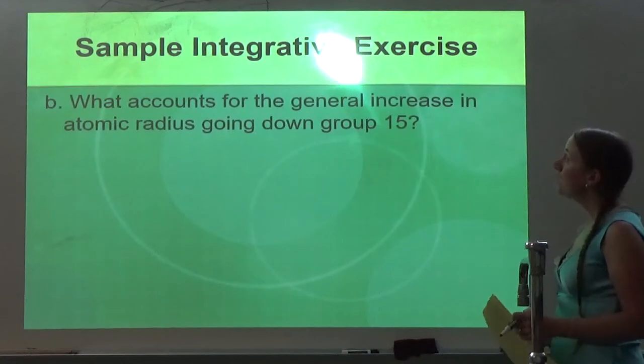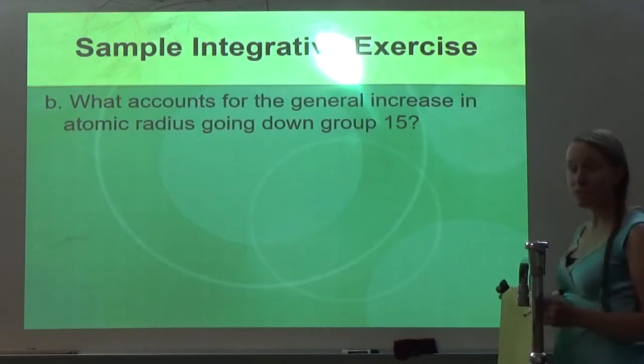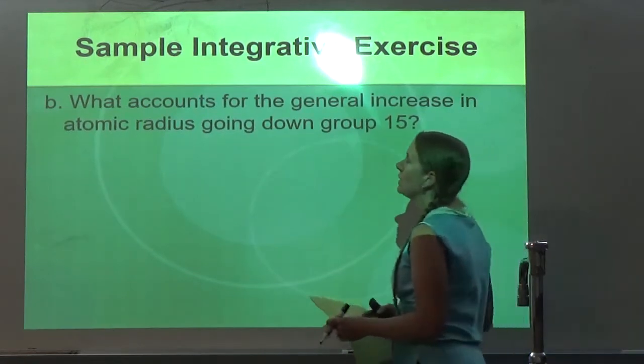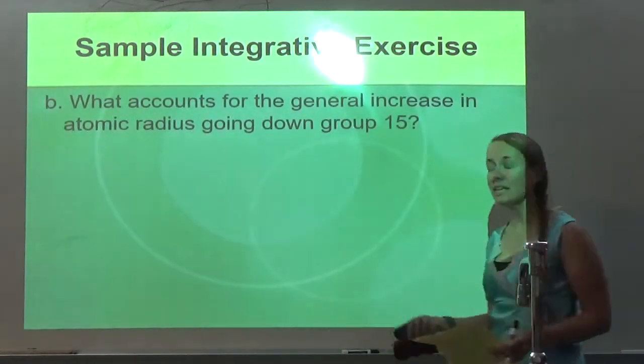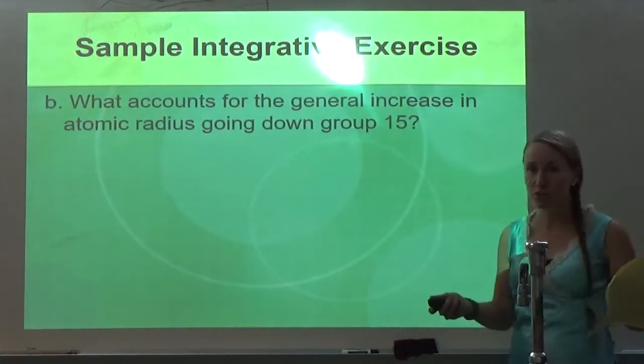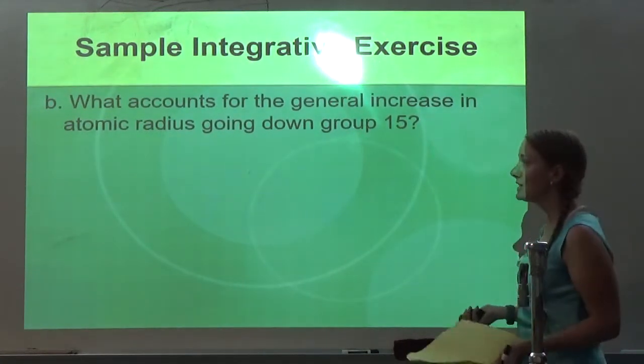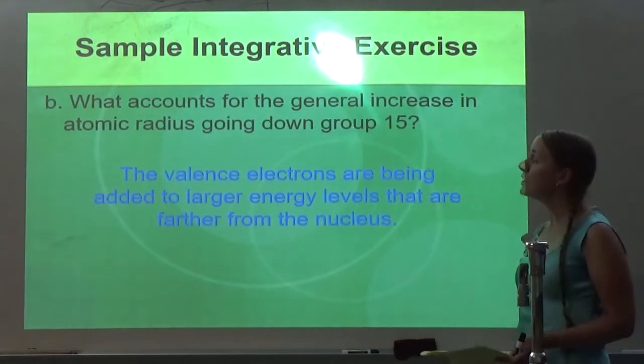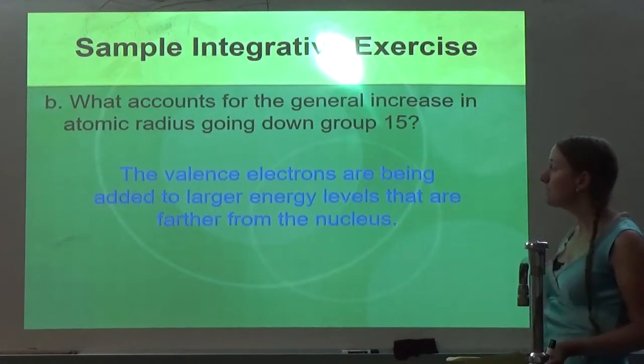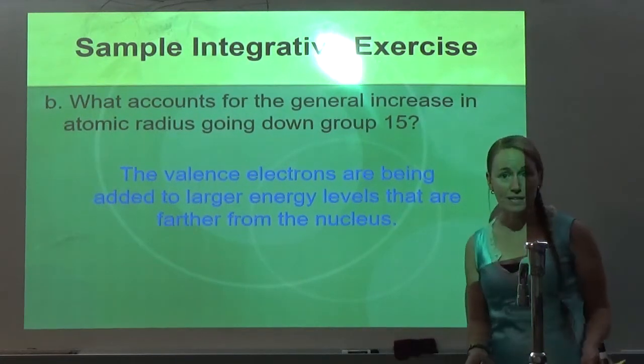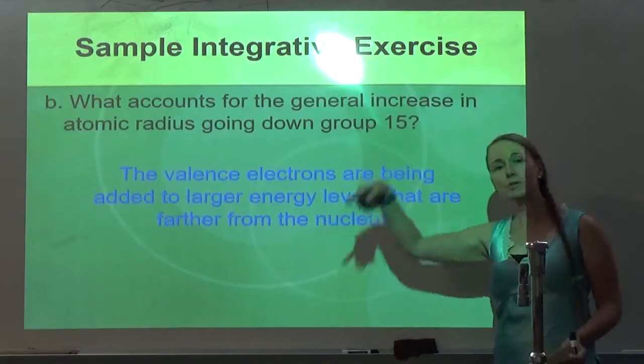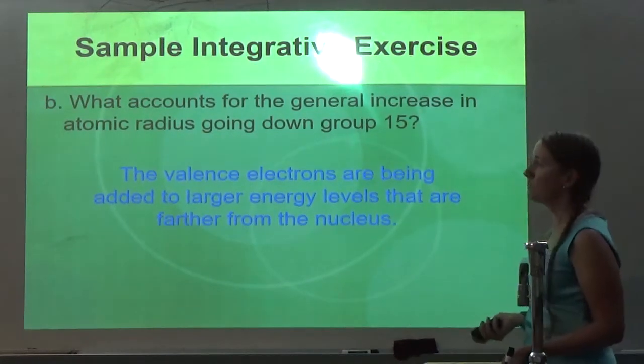It says, what accounts for the general increase in atomic radius going down group 15? Well, it doesn't matter which group you're going down. When we go down, atomic radius increases because larger energy levels are added. That's for all the groups. So the valence electrons are being added to larger energy levels that are farther from the nucleus. That's what's happening as you go down any of the groups for atomic radius.